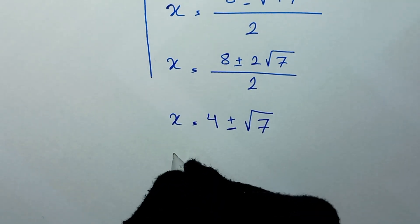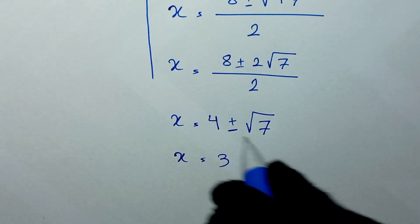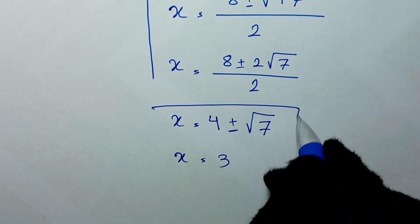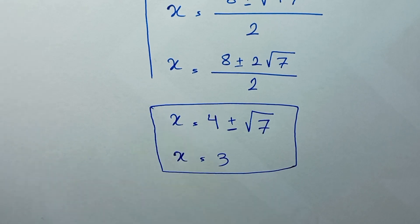So x equals 3, and x equals 4 plus or minus square root of 7. This is our final answer. Thank you for watching. Don't forget to like and subscribe, and see you in the next video. Goodbye!